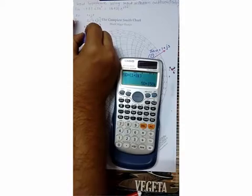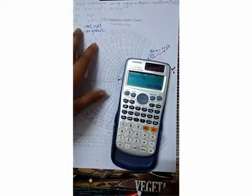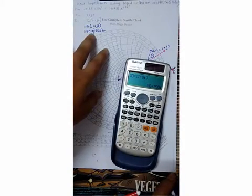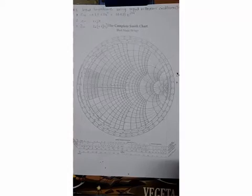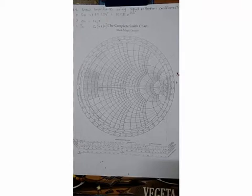In this way, you can find Z_in when gamma_in is less than or equal to 1. Thank you for watching. If you like my video, please subscribe to my channel for more updates.